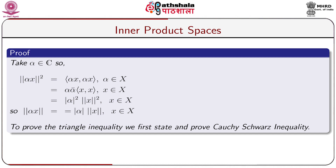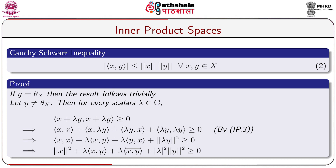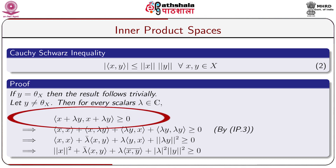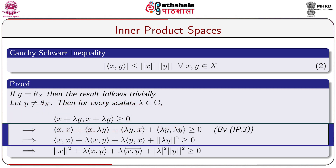To prove the triangle inequality, we first state and prove the Cauchy-Schwarz inequality: modulus of ⟨x, y⟩ is less than or equal to norm of x times norm of y, for all x, y belonging to X. If y equals the zero vector, the result follows trivially. If y is not the zero vector, then for every scalar lambda in C, ⟨x + lambda·y, x + lambda·y⟩ ≥ 0, which on simplification gives ⟨x, x⟩ + ⟨x, lambda·y⟩ + ⟨lambda·y, x⟩ + ⟨lambda·y, lambda·y⟩ ≥ 0 by axiom IP3.